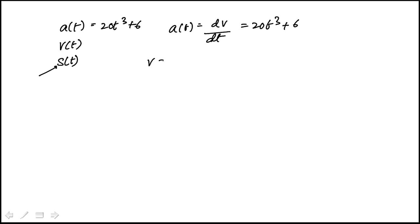So I can find the velocity function by integrating that function. And this would be 20 times t to the 4 over 4 plus 6t, constant of integration. So that's 5t to the 4 plus 6t plus c.